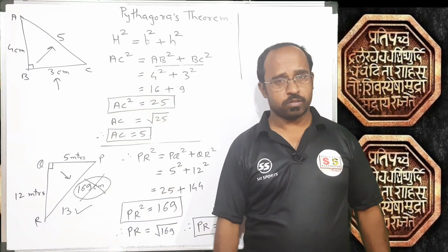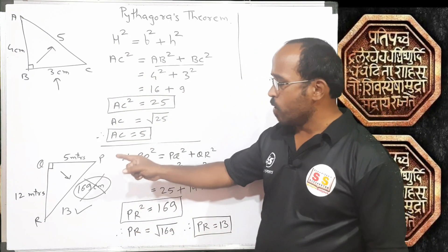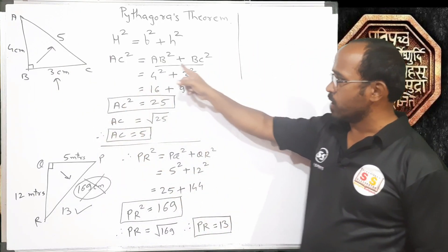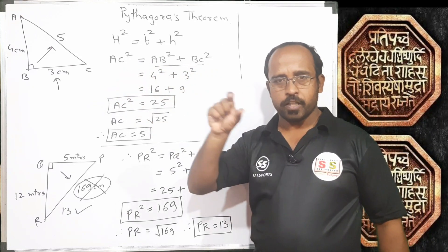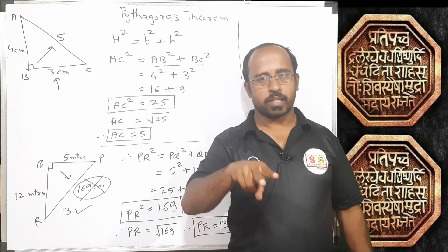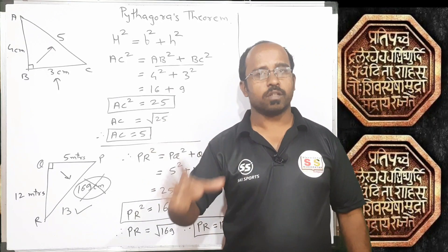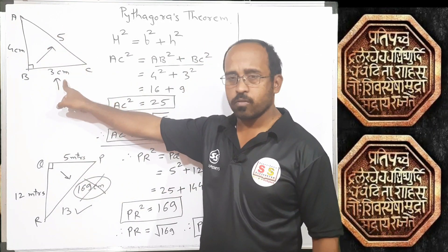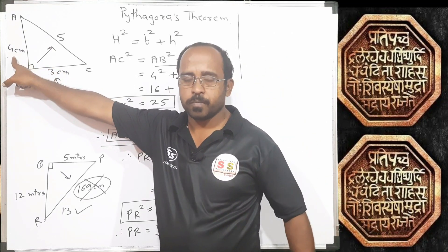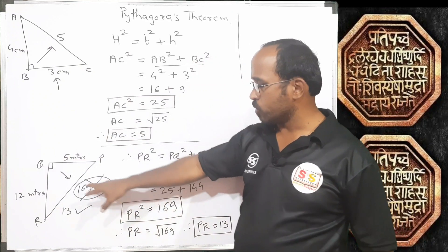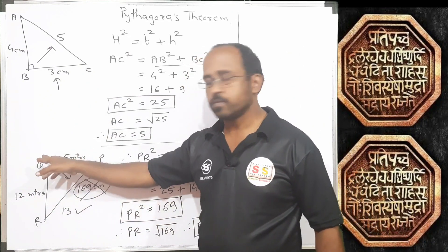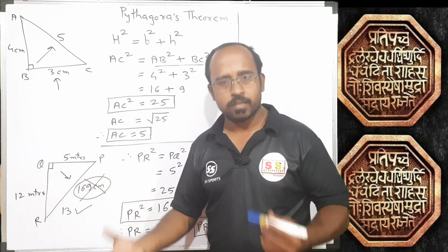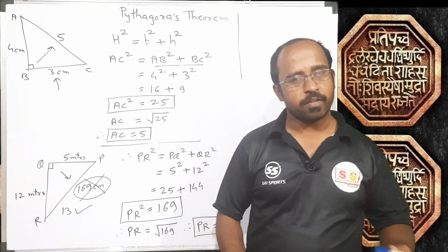Now, where can we use Pythagoras theorem? We can use it to find the missing side of a right angle triangle. In Pythagoras theorem there are three things: hypotenuse, base and height. If any two are given, we can use this theorem to find the third. In the first example, base 3 and height 4 were given and we found hypotenuse equals 5. In the second example, base 5 and height 12 were given and we found hypotenuse equals 13. Similarly, if hypotenuse and any one side are given, we can find the third.